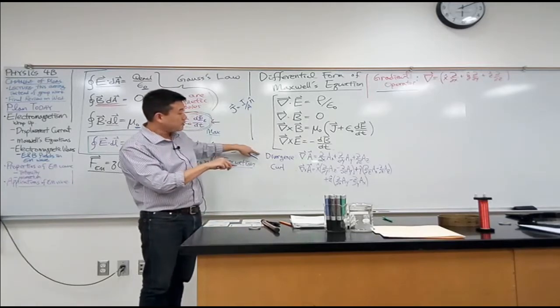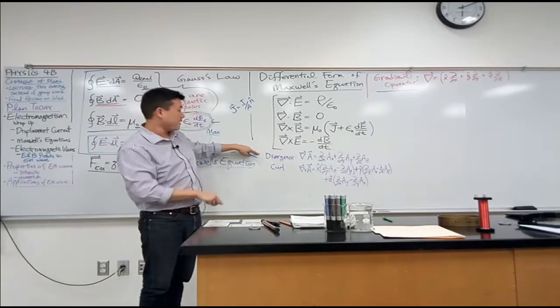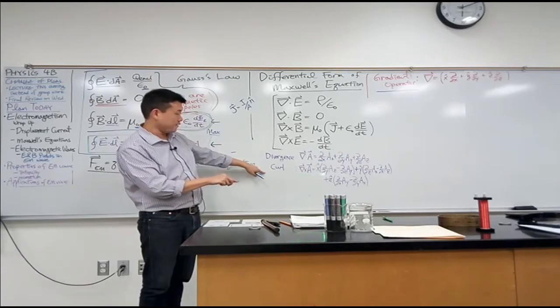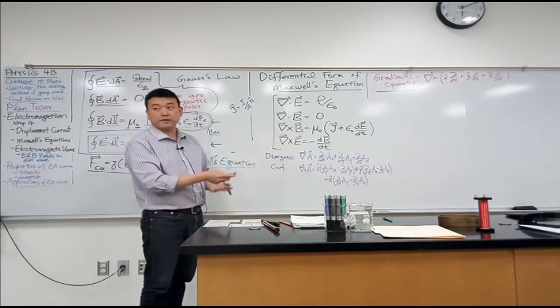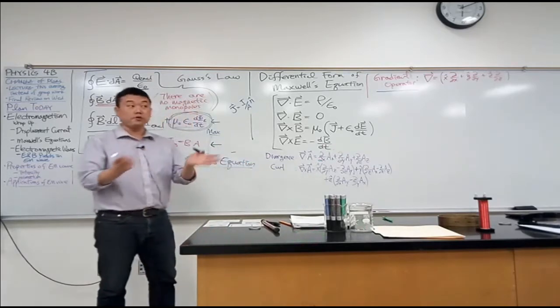So when you take a dot product, it looks like a dot product. And when you take a cross product, it looks like a cross product with some care in the ordering of the terms.